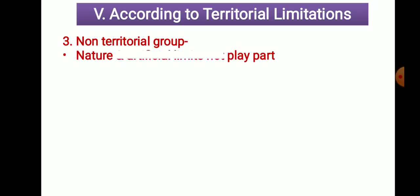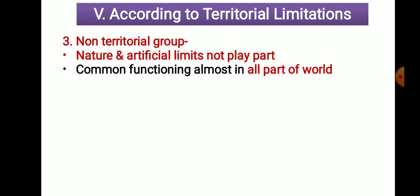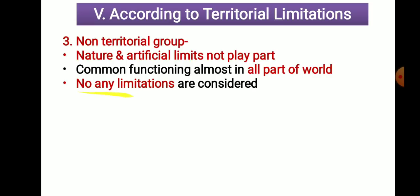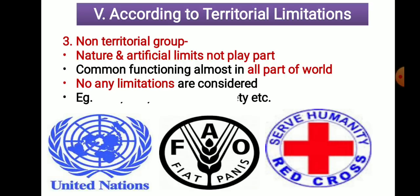The next type is the non-territorial group, where neither natural nor artificial limits play any part. There are no territorial or geographical limitations. The same function is carried out throughout the world. Examples are the United Nations Organization (UNO), the Food and Agriculture Organization (FAO), the Red Cross Society, and the World Health Organization (WHO) — which is playing an important role throughout the world in the Corona situation. So the three types are natural territorial, artificial territorial, and non-territorial.